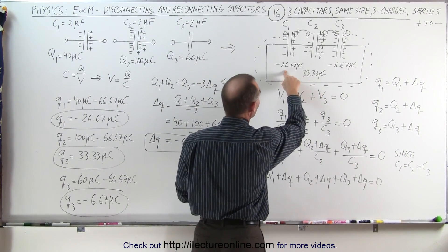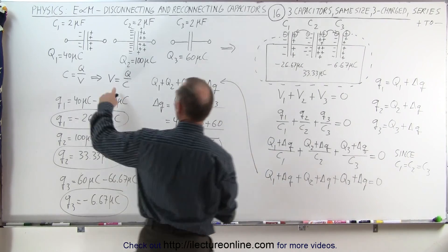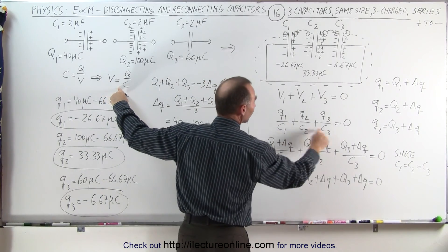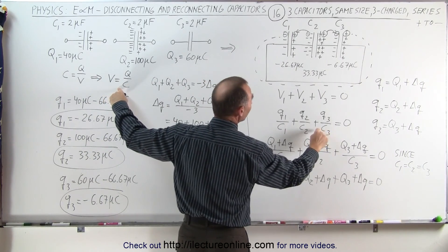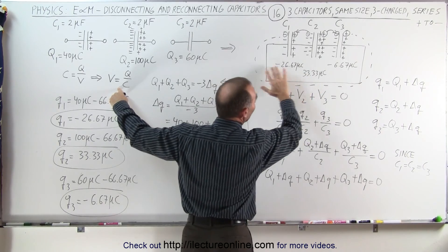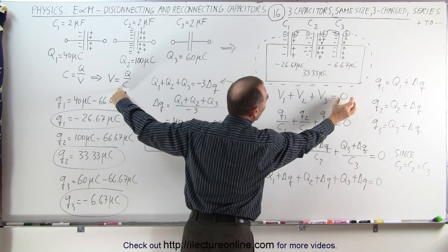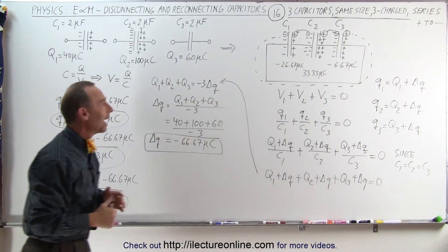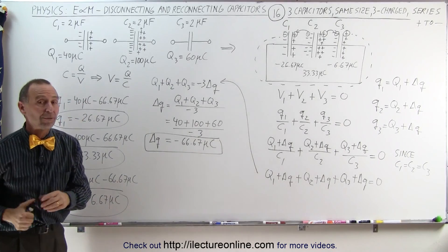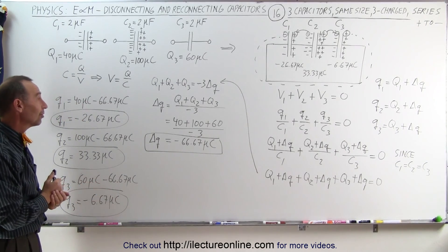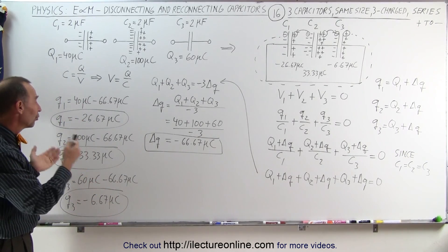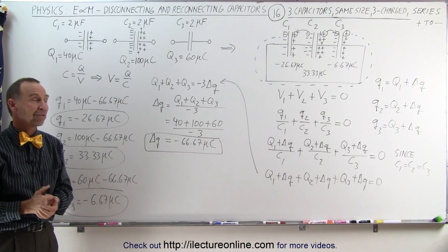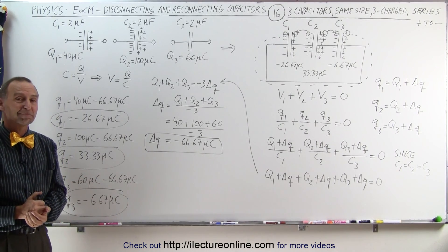We can verify this because voltage is Q divided by C, and the C's are all the same for each capacitor. So proportionally, when we add these charges together we should get zero, and you can see that will be the case. So it looks like we did get the right result, and those are the final charges on the three capacitors in this particular case.